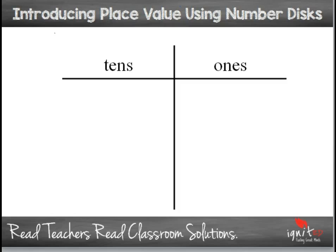Today we're going to start with simple numbers using number disks. Number disks are coin-like shapes with numbers on them. They're very easy to use because they don't have all those moving parts that end up on the floor or thrown across the classroom. They're very simple, concrete objects you can use in a place value chart, and they can also be drawn. Base-10 blocks are normally difficult for young learners in first and second grade to draw. You'll see how simple it is to implement number disks in your classroom.